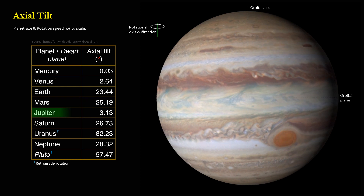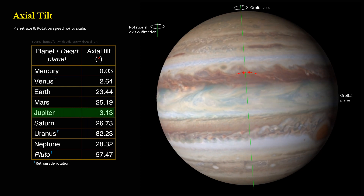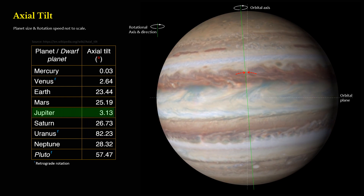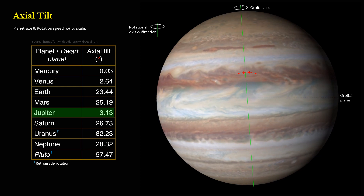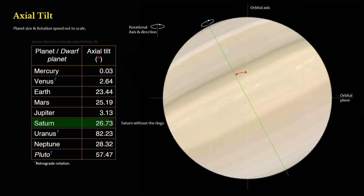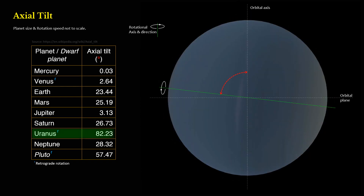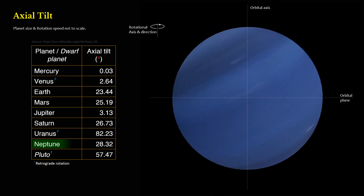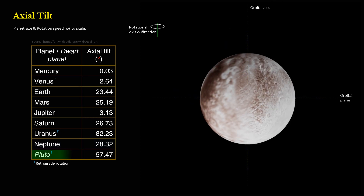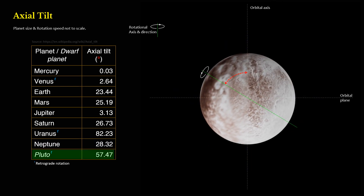Jupiter: 3.13 degrees. Saturn: 26.73 degrees. Uranus: 82.23 degrees. Neptune: 28.32 degrees. Pluto: 57.47 degrees.